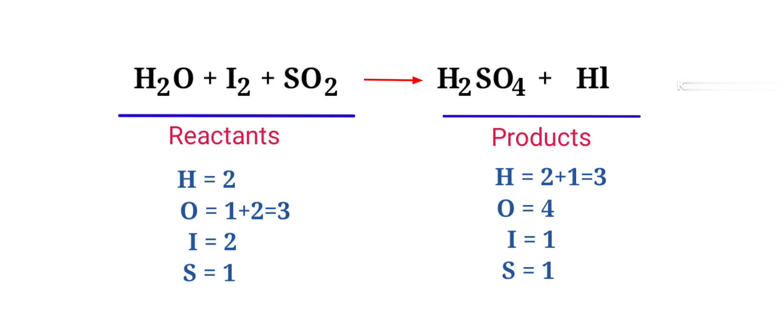And the products side, there are 3 hydrogen atoms, 4 oxygen atoms, 1 iodine atom and 1 sulfur atom present. The number of atoms are not balanced on both sides.